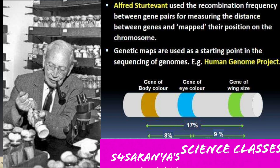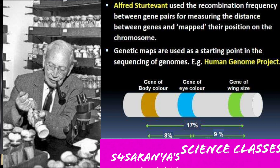So we understand linkage and recombination properly. Tightly linked genes show low recombination, and loosely linked genes show high recombination. The scientist Alfred Sturtevant used the recombination frequency between gene pairs for measuring the distance between genes and mapped their positions on chromosomes. These maps are called genetic maps, and they are used as a starting point in the sequencing of genomes, such as in the Human Genome Project.